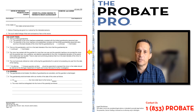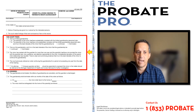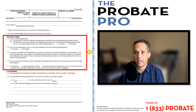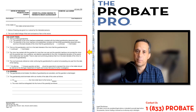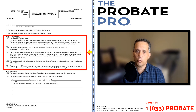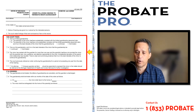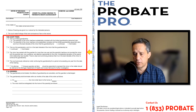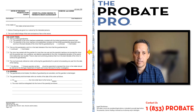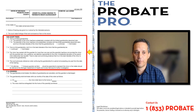Under paragraph four, if it's a full guardianship, this is the provision that's checked, and it provides that it's in the best interest of the minor that the guardianship be either continued or terminated. Remember, even if you file the petition to terminate the guardianship, in the event that the court rules against that petition, this same form would be used and the guardianship would be continued. On the other hand, if it's terminated, it would also be clicked under paragraph four under the termination section.